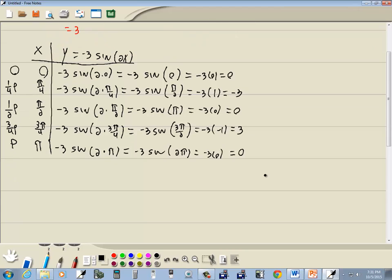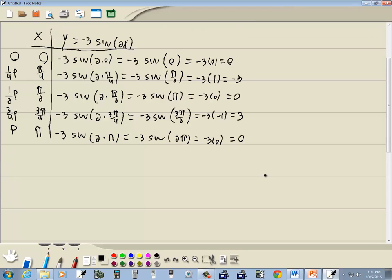And that's our t-chart for one period. Let's graph these. Let's say that's my π there. So then this will be π over 2. This will be π over 4. And this will be 3π over 4.